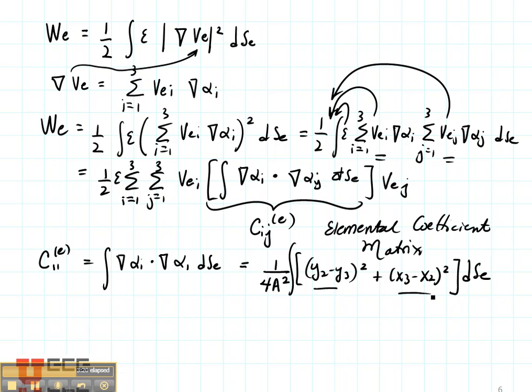Well, there's nothing varying in here over that element. Those are set points. So this integral simply becomes the area of the element which in fact is the same thing that shows up here. So this is going to be 1 over 4A times Y2 minus Y3 squared plus X3 minus X2 squared. And that's going to be our C11 for this particular element.